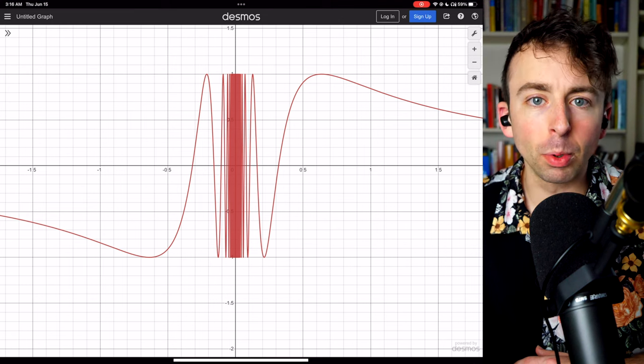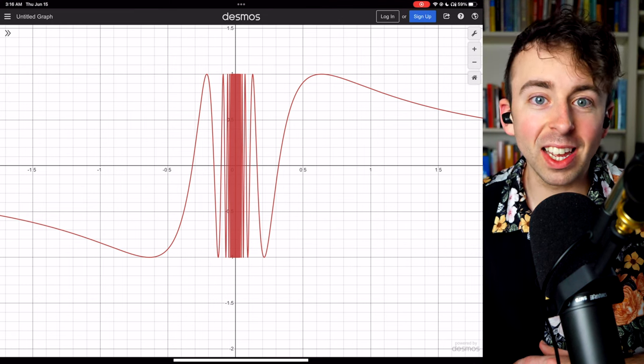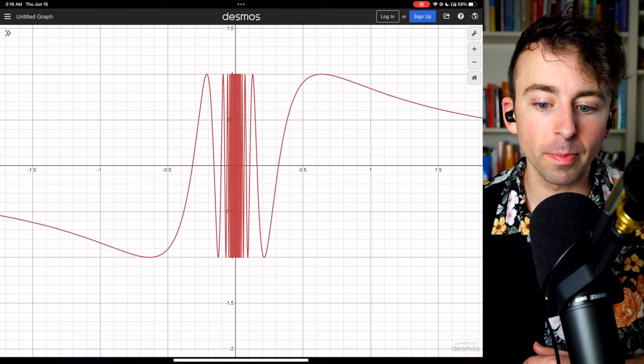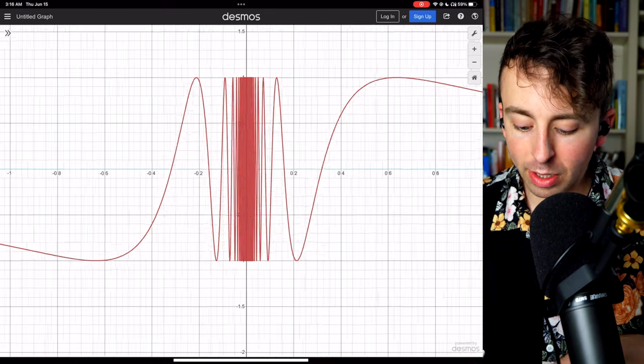it just looks like a solid block in Desmos. That's because it's oscillating quicker and quicker as we get closer and closer to 0. If we zoom in,